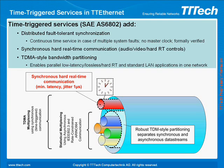The time-triggered services we use in TT Ethernet add a global timebase to the distributed system. The global timebase is created using distributed fault-tolerant algorithms at the network level and enables synchronization of end systems. The synchronization algorithm is designed and formally verified to provide continuous synchronization even in the case of multiple system faults.